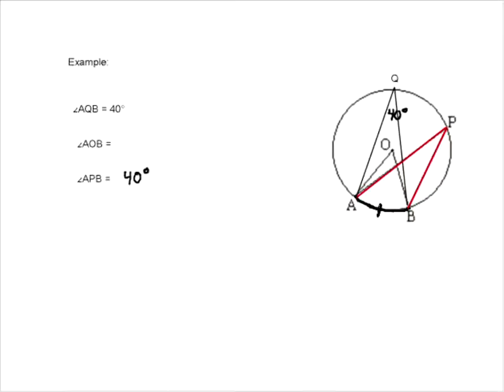Now, we also have a central angle subtending that same arc. And here's our central angle, AOB. And if AOB, the central angle subtends the same arc as an inscribed angle, then we know from the central angle theorem that the central angle must be double the inscribed angle. So we know that AOB must be 80 degrees. This is 40 and this is 80.